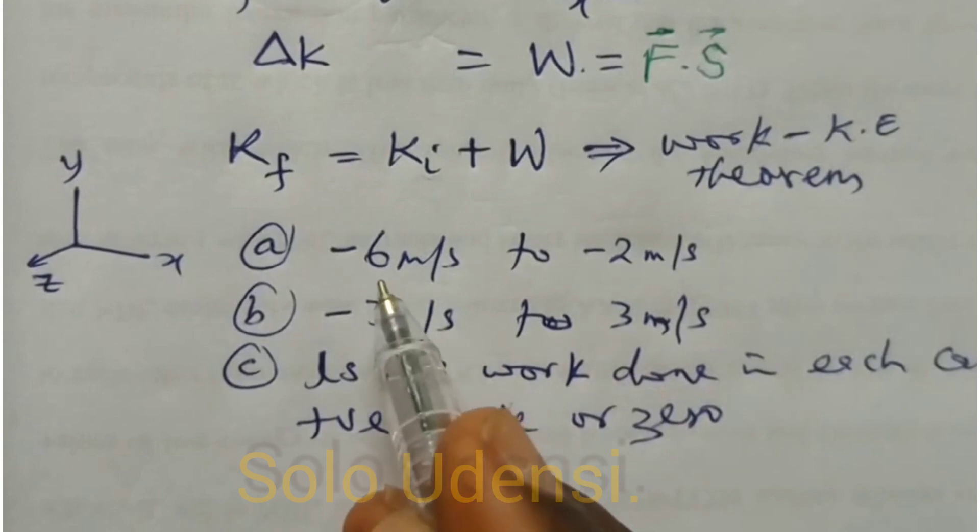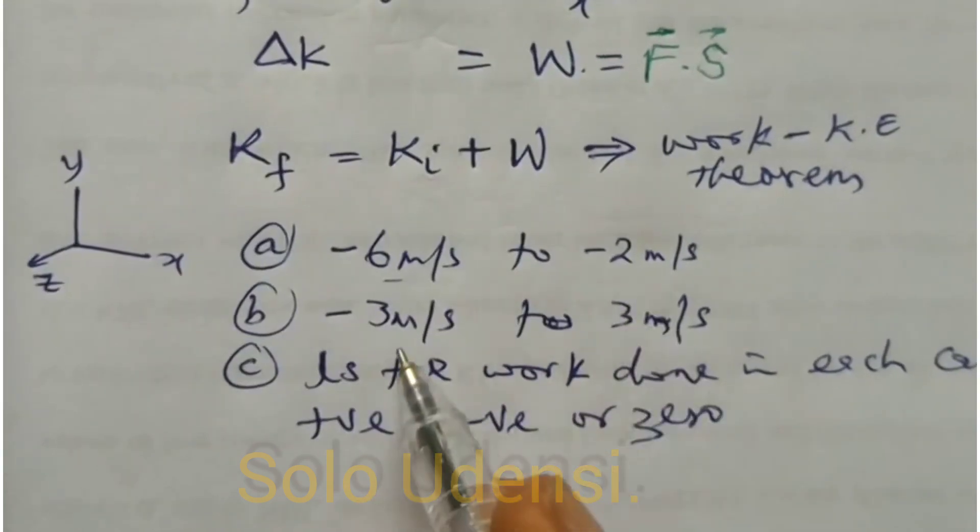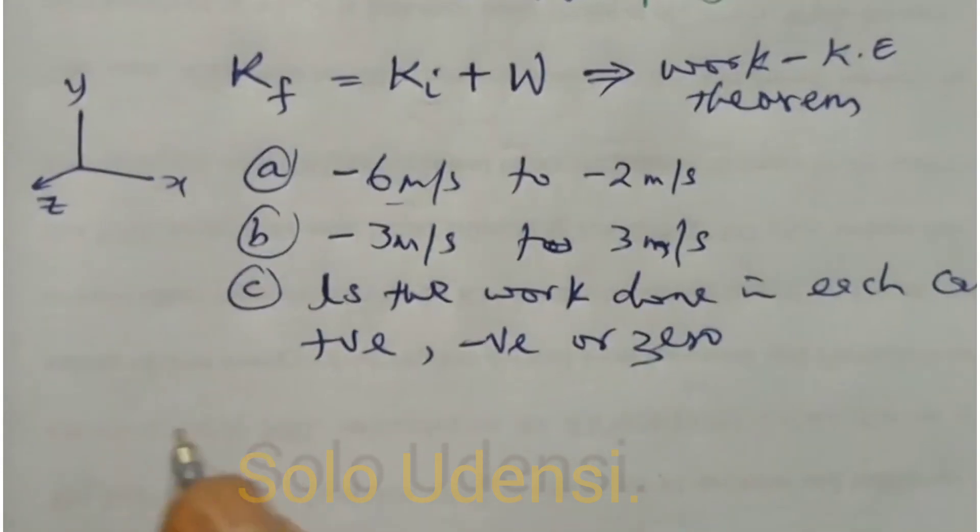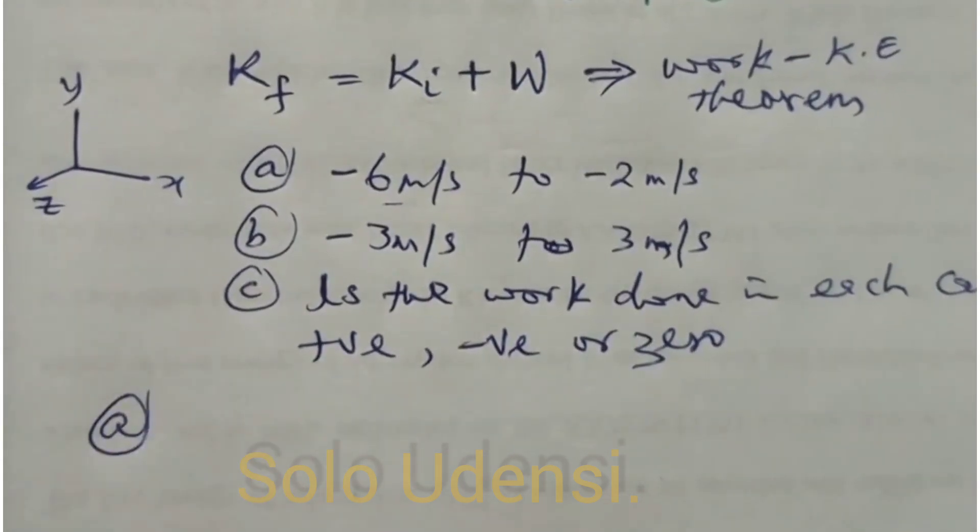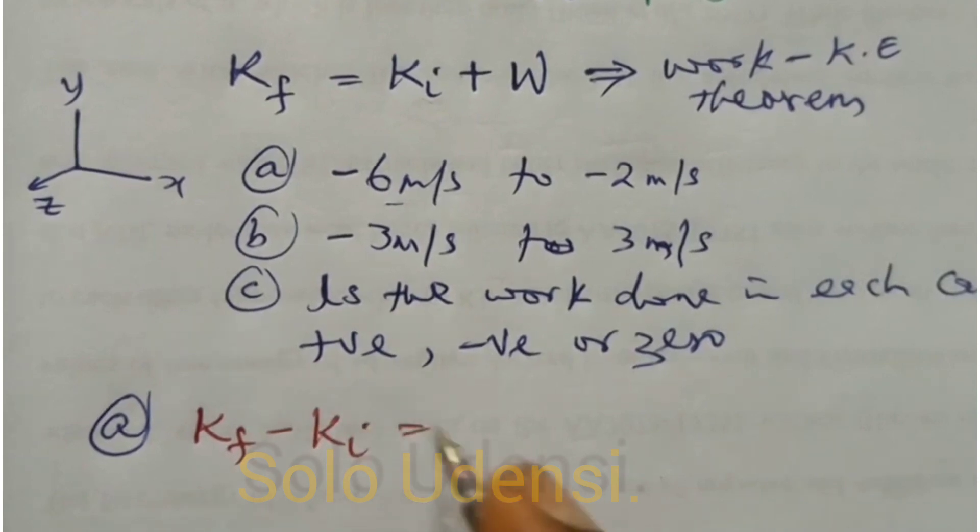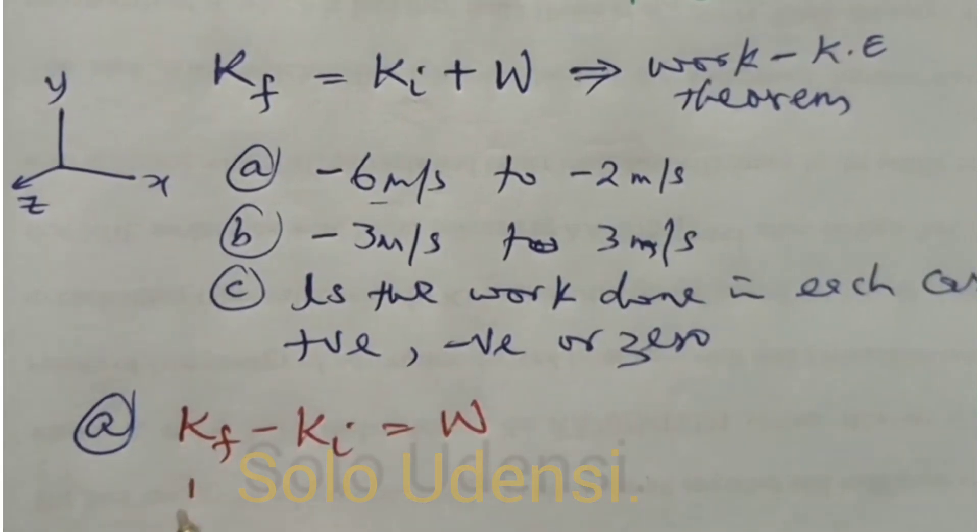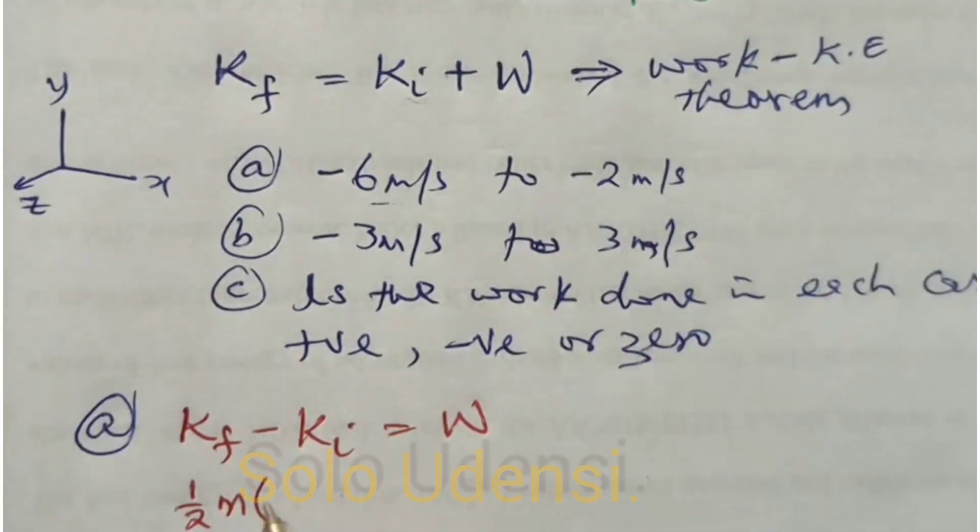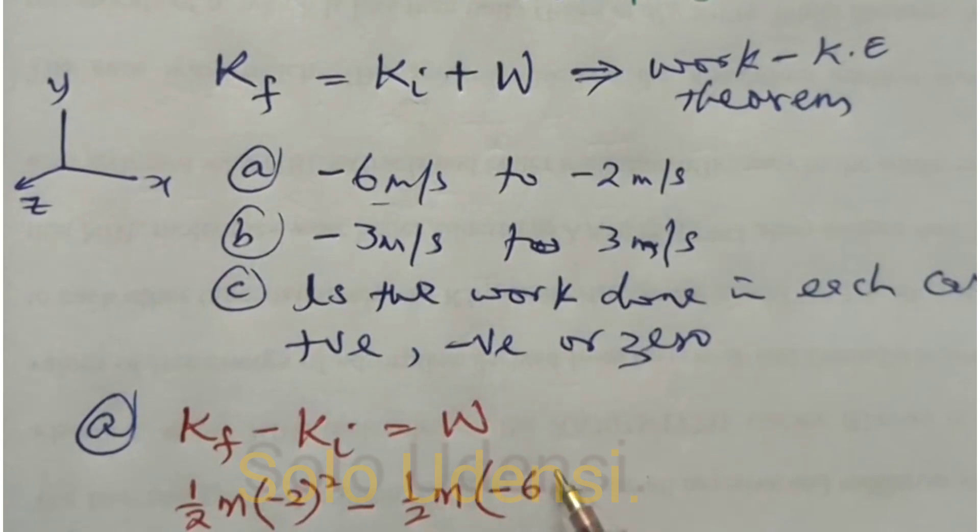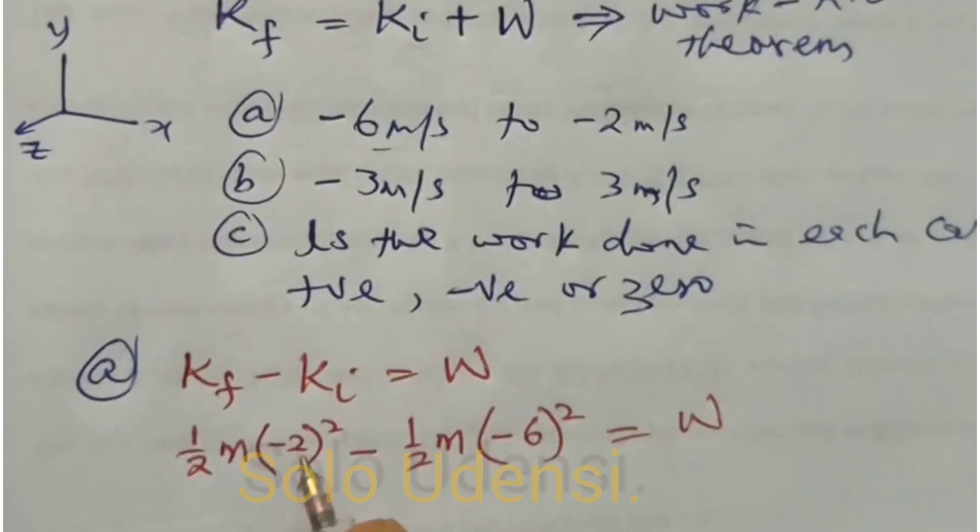For this first one, if we take the first one and we use the work energy theorem formula, Kf minus Ki is equal to work done, we can say that ½m(-2)² minus ½m(-6)² is equal to W. So what you get is that this is 2m minus 18m is equal to W.